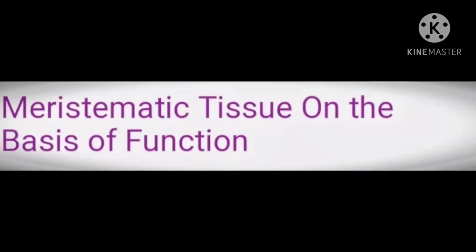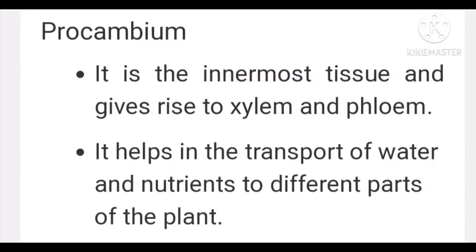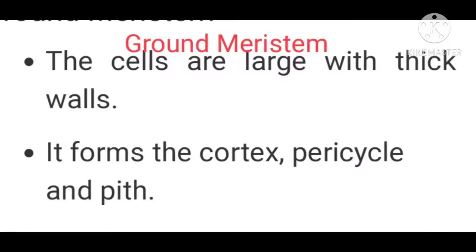Function ke adhaar par Meristematic Tissue teen tarah hota hai. Pahla hota hai Protoderm — it is the outermost plant tissue and forms the epidermis; it protects the plant from mechanical shocks and injury, kyunki epidermis jo hoti hai woh bahar ki layer hoti hai. Second hai Pro-cambium — it is the innermost tissue and gives rise to xylem and phloem; it helps in the transport of water and nutrients to different parts of the plant. Phir aata hai Ground Meristem — iski cells large aur thick hoti hai, aur yeh cortex, pericycle aur pith ko form karta hai.